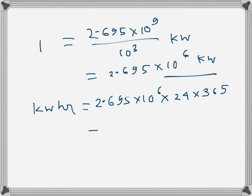So that gives the number of kilowatt-hours in one year: 2.361 × 10^10 kilowatt-hours.